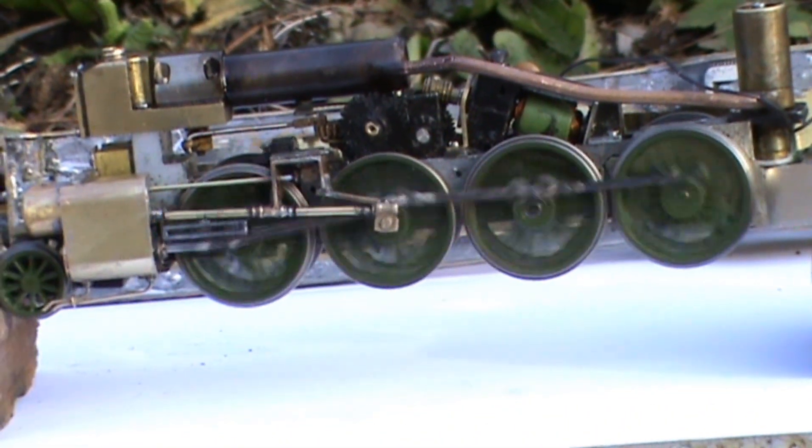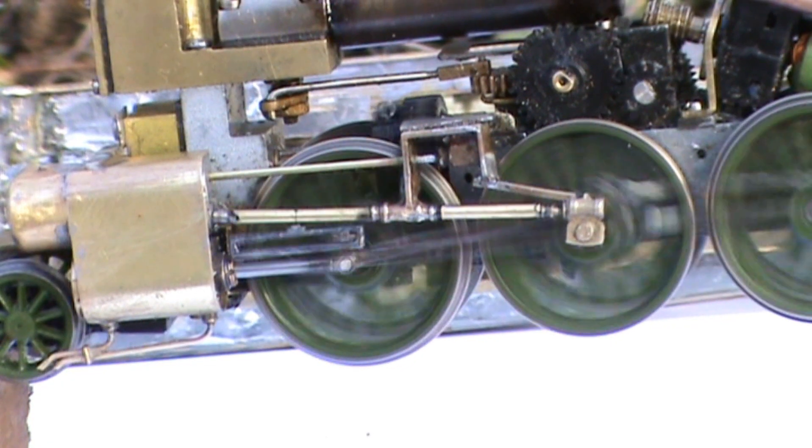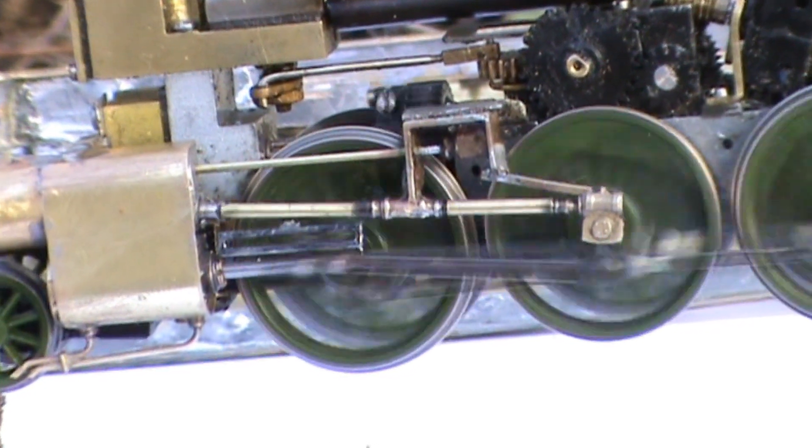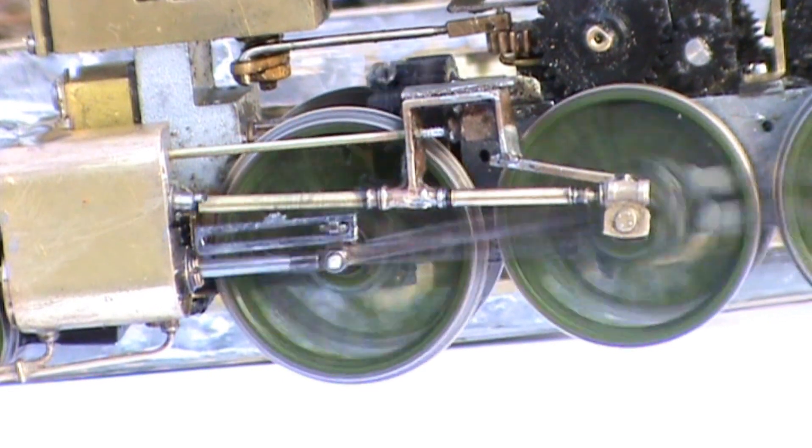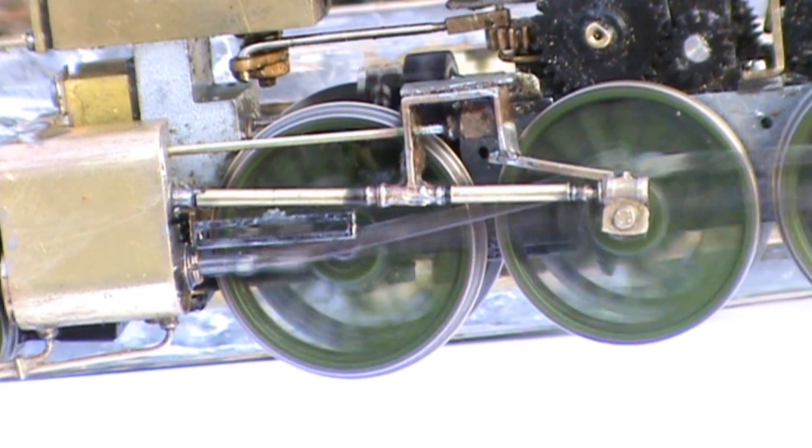The front drive shaft is running that much out of center it is rubbing on the crosshead, making the crosshead go up and down. You can see a scratch line right in the middle of the brass shaft.